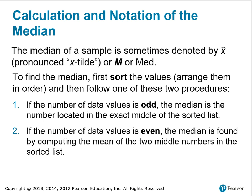Calculation and notation of the median. The median of a sample is sometimes denoted by x with a little squiggly mark over the top of it, which is pronounced x-tilde, or capital M or MED. To find the median, you first sort the values, arrange them in order, and then follow one of these two procedures. If the number of data values is odd, the median is the number located in the exact middle of the sorted list. If the number of data values is even, the median is found by computing the mean of the two middle numbers in the sorted list.